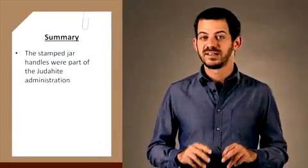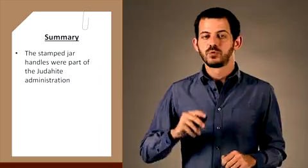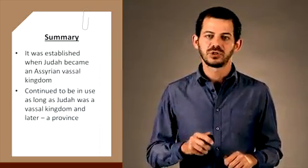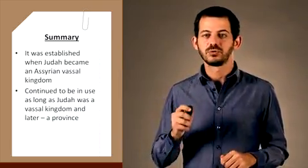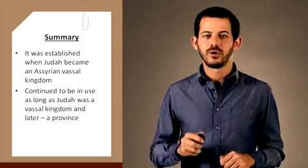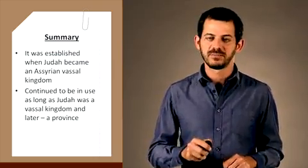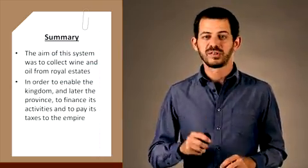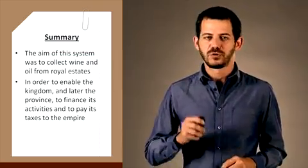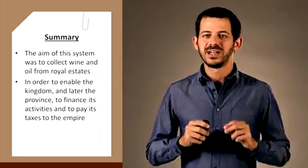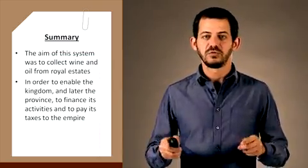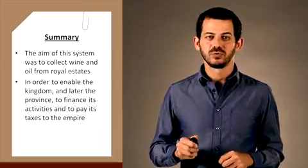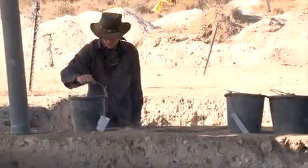Thus, the assumption is that the stamped jar handles were part of the Judahite administration. It was established when Judah became an Assyrian vassal kingdom and continued to be in use as long as Judah was a vassal kingdom and later a province. The aim of the system was to collect wine and oil from royal estates in order to enable the kingdom and later the province to finance its activities and to pay its taxes to the empire.